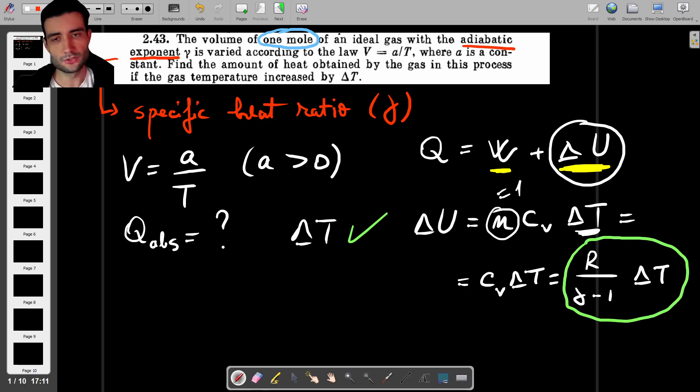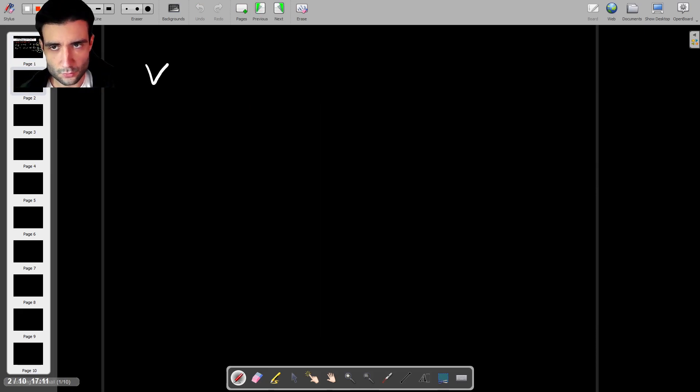Okay so right now we have this delta U. We have the change in internal energy in a form which involves variables that we know. We have R which should be RU in reality that's the universal gas constant not the specific one. We know gamma because it's considered given and delta T is also considered given. So let's go on and find what the work is.